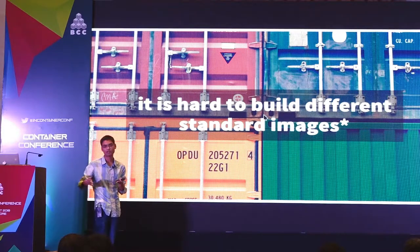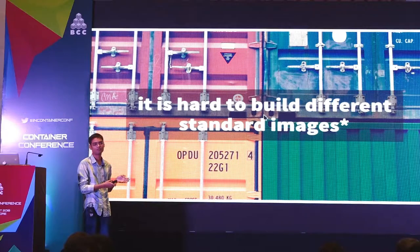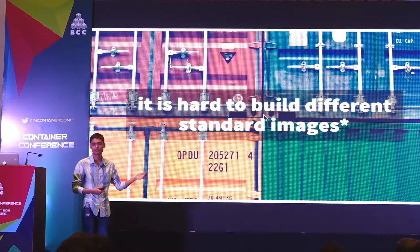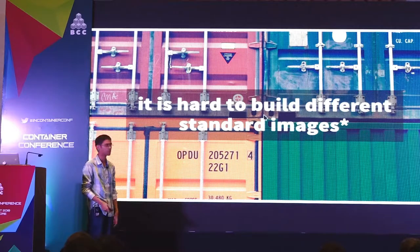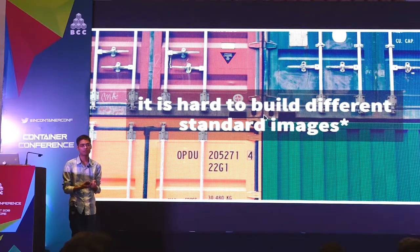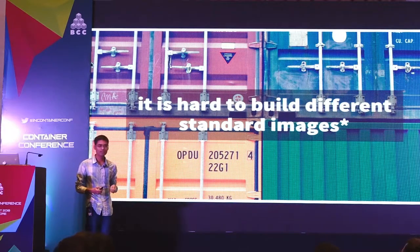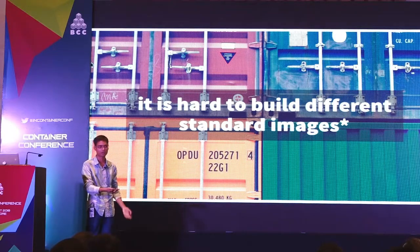All of your container images that are running should have some common structure. We have a checklist internally at Razorpay saying make sure your service is running on such-and-such ports, and there's a slash-status endpoint we can use as a liveness probe in Kubernetes. We want to build these standard images — and this is where the problem comes. It's hard to build standard images if your developers are writing their own images entirely by themselves.